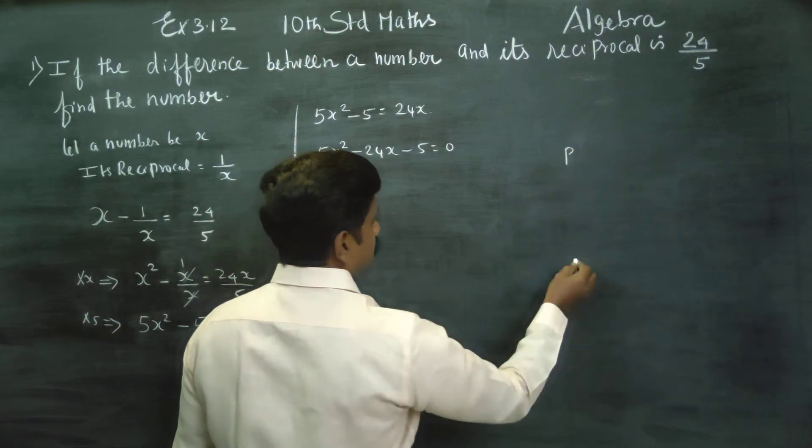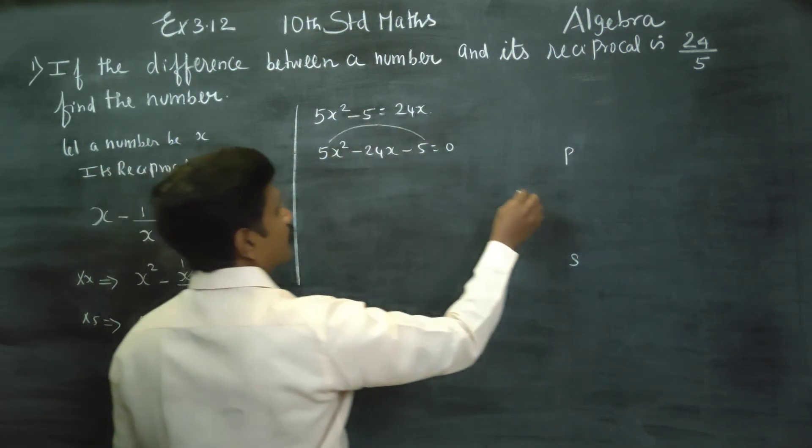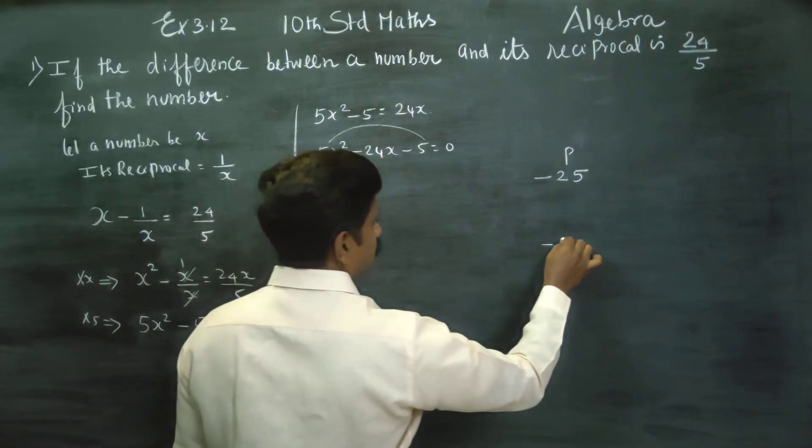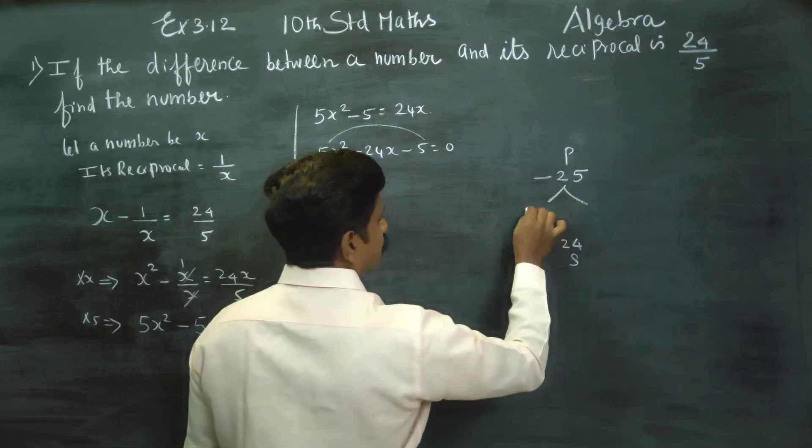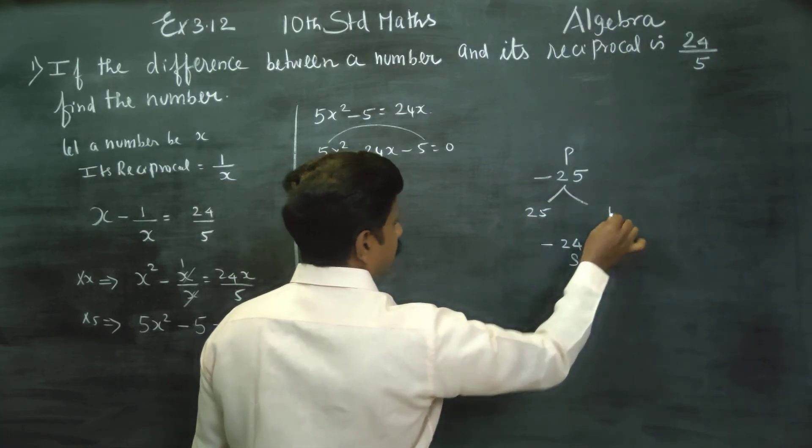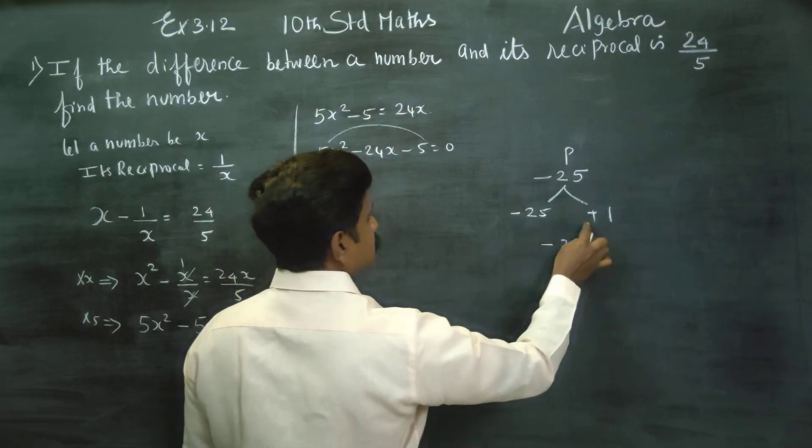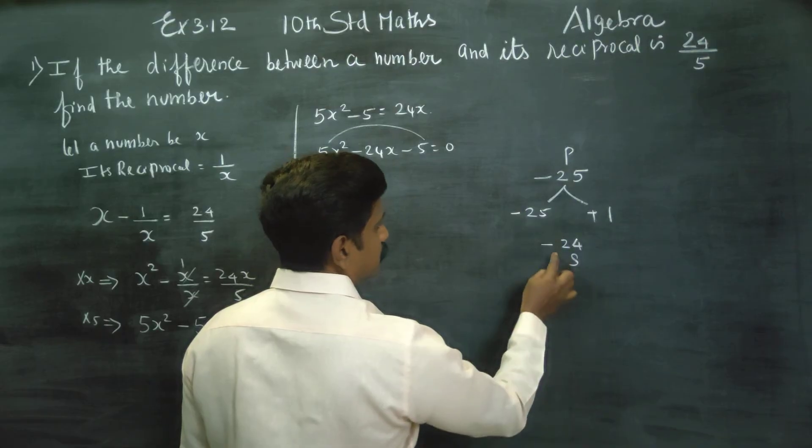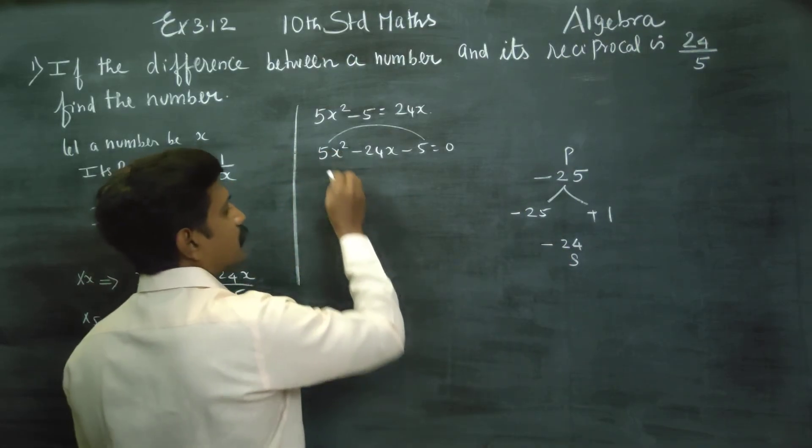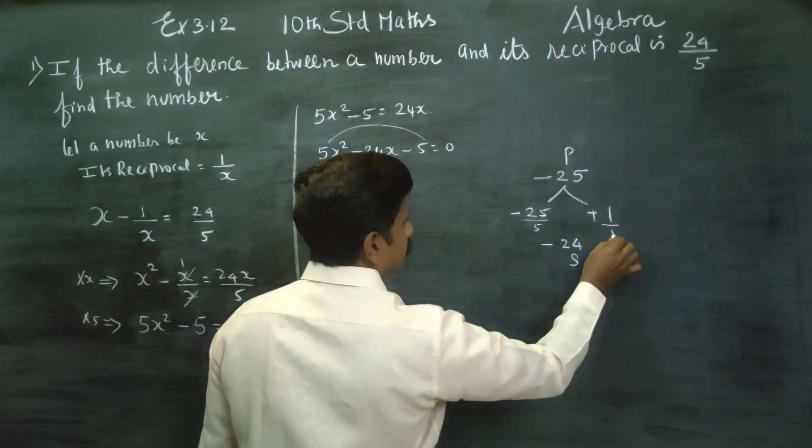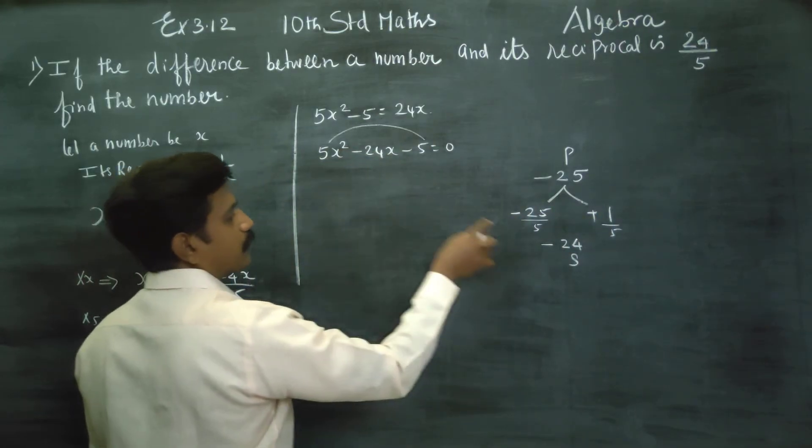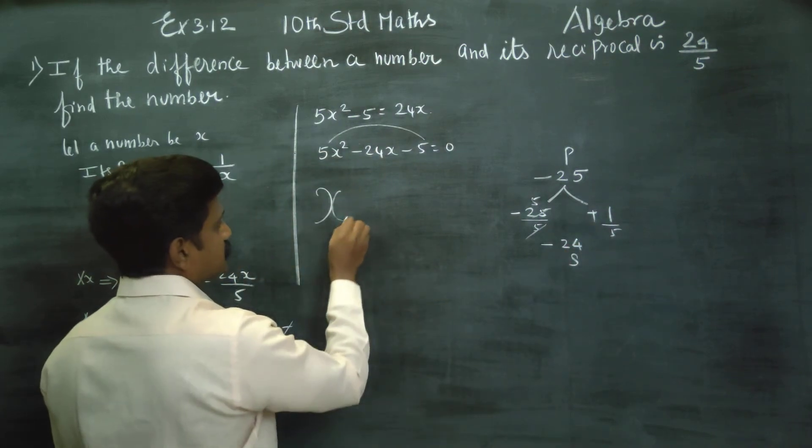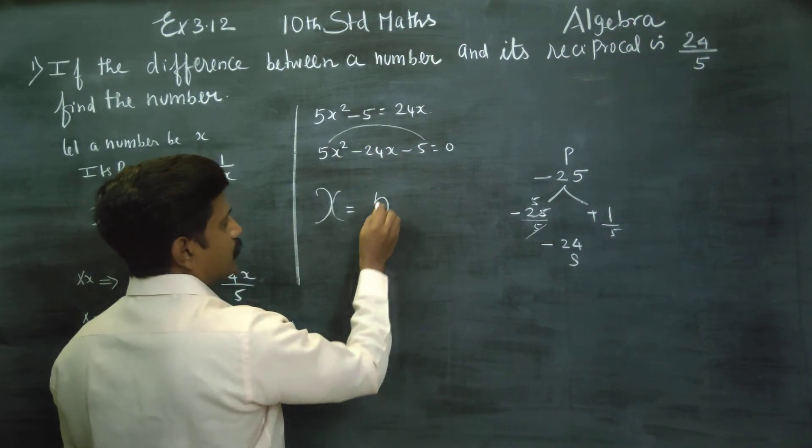Using the product-sum method: 5 times minus 5 equals minus 25. The sum is minus 24. 25 and 1 make 25. Minus into plus gives minus. Factoring gives us x equals 5 or x equals minus 1/5.